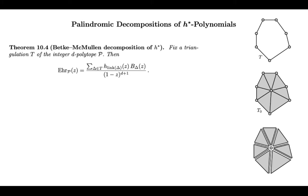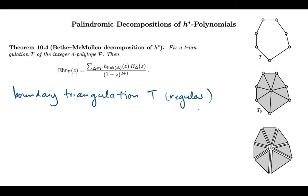Our plan now is to start with a boundary triangulation — in fact, one that is regular. On the right, in the top picture, you see a schematic of this. Then we use the fact that we have an interior lattice point to compute a triangulation coming from this boundary triangulation. So what I'll do is take each simplex in my boundary triangulation and take the convex hull together with this interior point. This is called coning over a triangulation. The effect is that the triangulation of the interior of the polytope corresponds entirely to the triangulation of the boundary.